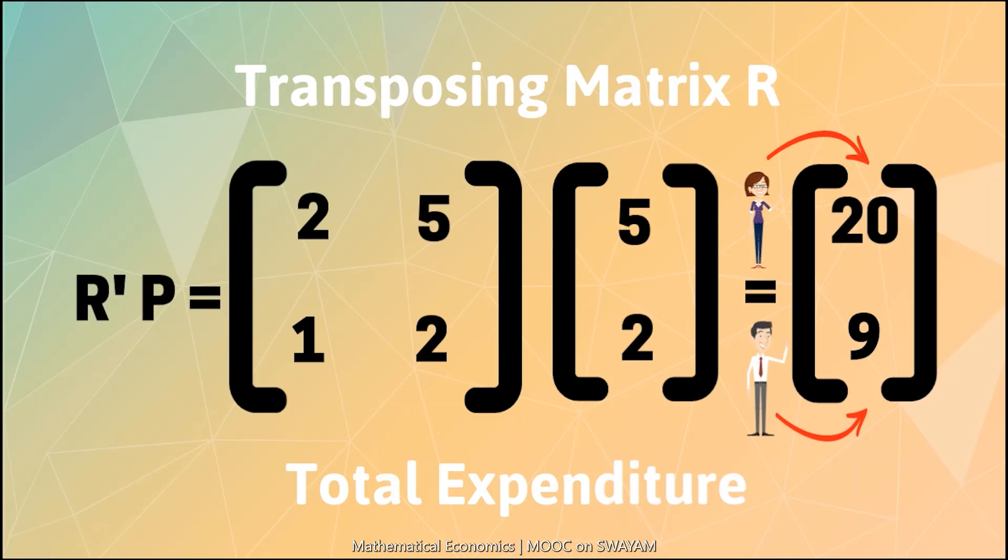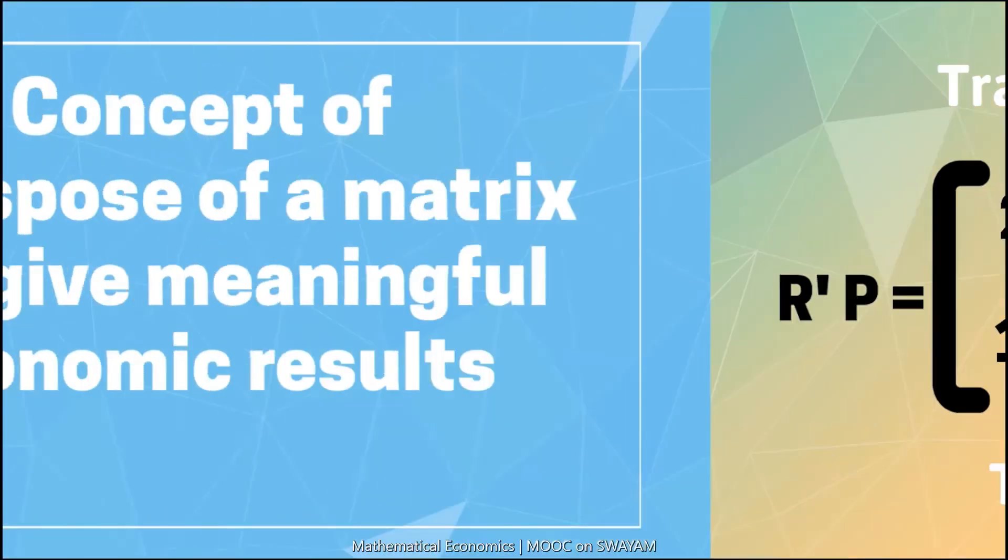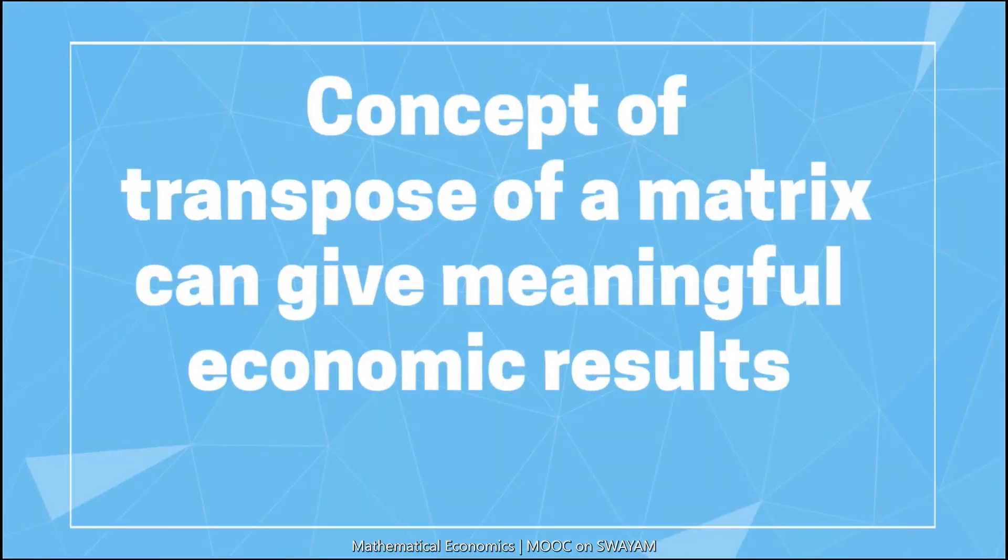The first row gives the expenditure by the woman, and the second row gives the expenditure by the man. This concept may be used for a large number of people and a variety of goods in an economy.